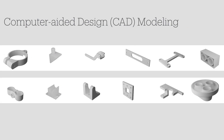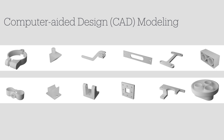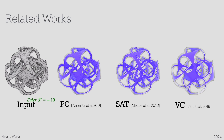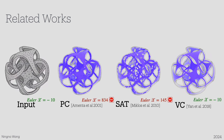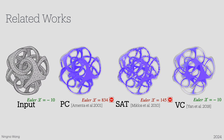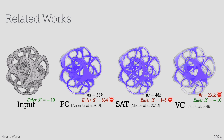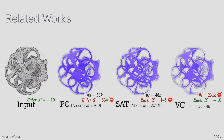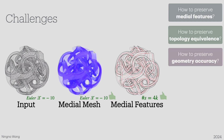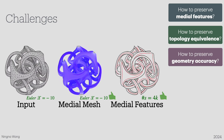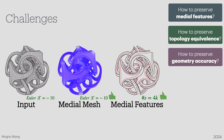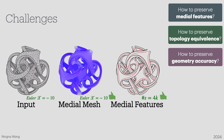However, previous methods only focus on organic shapes and are not able to compute high-quality MAT for CAD models. These methods cannot preserve external features such as sharp edges and corners. They also struggle with topology correctness, whose Euler characteristic is not consistent with the input. On the other side, MAT requires a larger number of medial spheres to preserve homotopy equivalence. To generate high-quality medial meshes for both CAD models and organic shapes, my PhD research addresses three key challenges: how to preserve medial features, ensure topology equivalence, and maintain geometric accuracy using the least number of medial spheres.